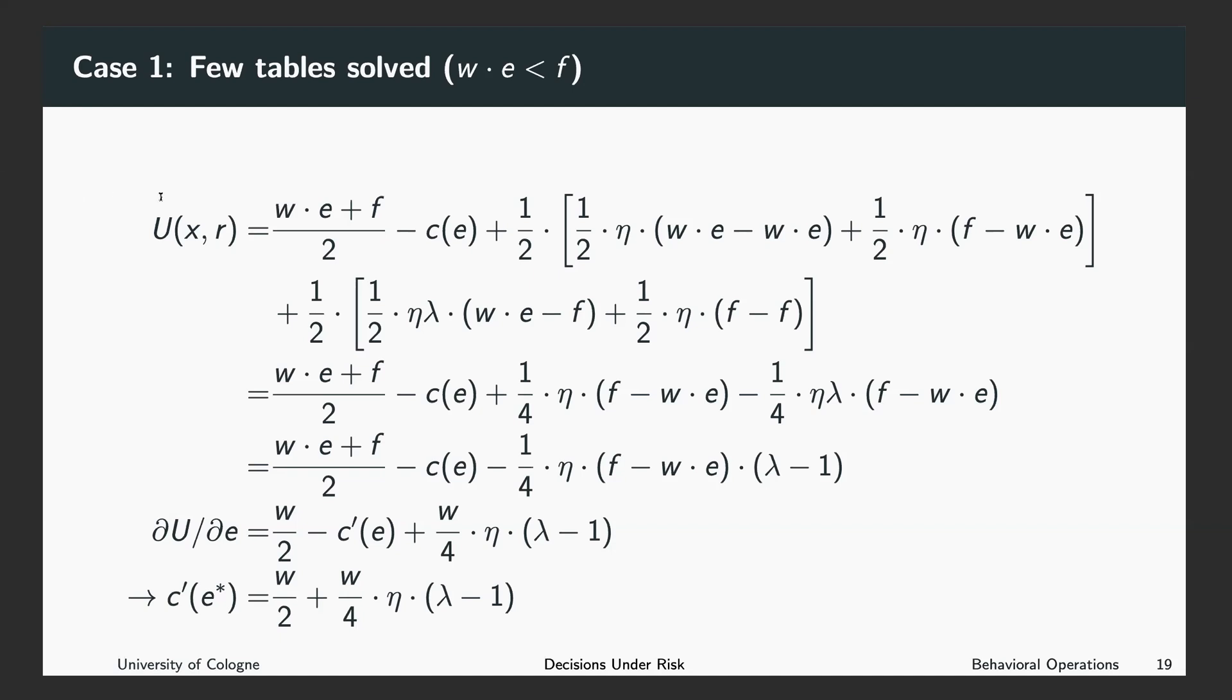So let's start in the first line. With probability of 50%, we will be paid the piece rate times the number of tables we solved. Also with probability one half, we will receive the piece rate. In each case, we have to cover our effort costs, which is just C of E.